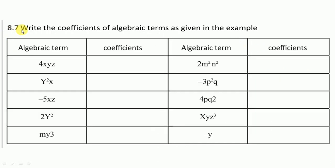Question 8.7: Write the coefficients of algebraic terms as given in the example. Here it should be alphabetic coefficient because in the next question 8.8 it is numeric coefficient. So we consider as alphabetic coefficient. We write here xyz and here y²x.